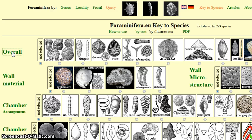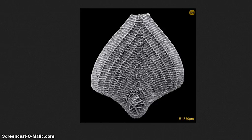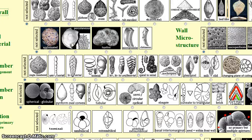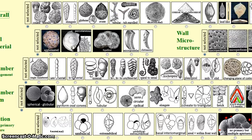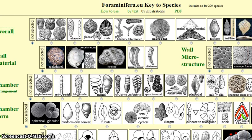Only after you are familiar with the features does it make sense to look at the foraminifera you want to identify. Let's take a look at one example. This foraminifera — from the side view you can see it's quite flat. So going back to our key to species and the overall category, it's easy to identify it as being leaf-like. You just need to click on the illustration 'leaf-like'. The dot below shows your choice.